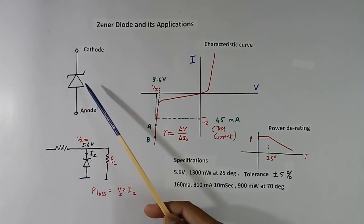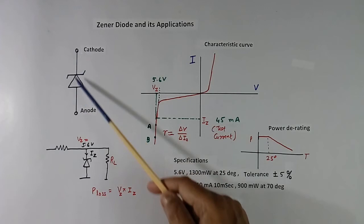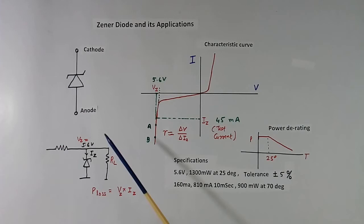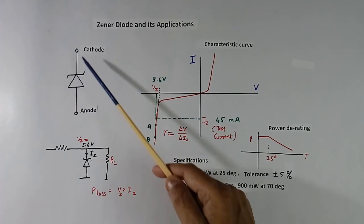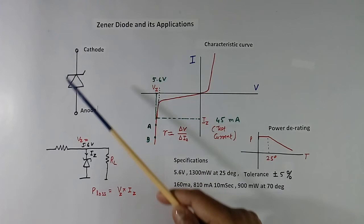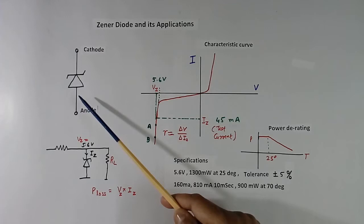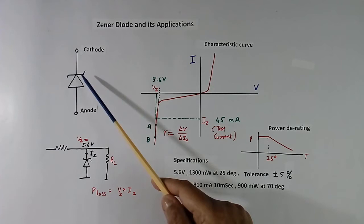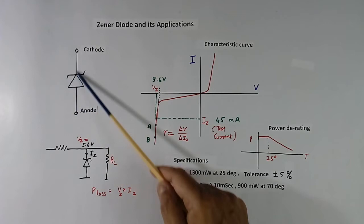If we flow the current in forward direction, forward means anode to cathode, current is flowing like this, then it will be as like normal diode. But if we apply the voltage in reverse direction, reverse means cathode voltage positive and anode voltage negative, or cathode voltage more than anode voltage, and voltage in reverse direction becomes equal or greater than breakdown voltage of Zener diode, then current starts flowing. So in Zener diode, current can flow in both directions.